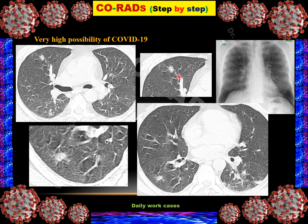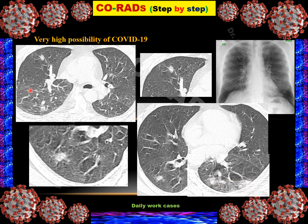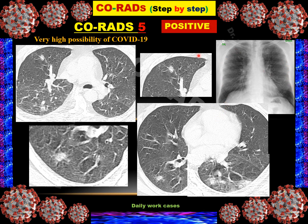Case 11: Multifocal halo signs associated with ground glass opacity, septal thickening at the pleural surface, and subpleural multiplicity of lesions. All features make the classification CO-RADS 5 — very high possibility of COVID-19. On the frontal chest radiograph, there is subtle peripheral opacity where the ribs cannot be discriminated from the opacity. RT-PCR was positive.